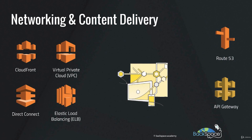Amazon API Gateway is a fully managed service that makes it easy for developers to create and deploy secure application programming interfaces, or APIs, at any scale. It handles all of the tasks involved in accepting and processing up to hundreds of thousands of concurrent API calls. It's a serverless service, so you don't need to worry about the underlying infrastructure — AWS looks after everything for you.